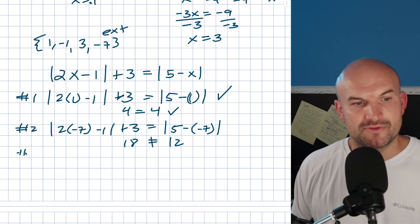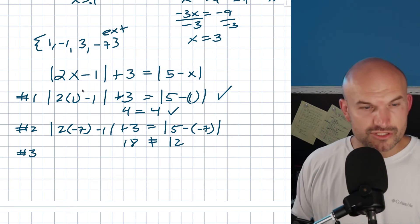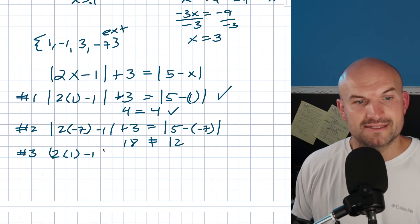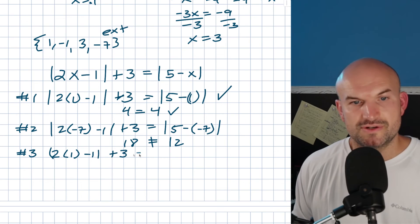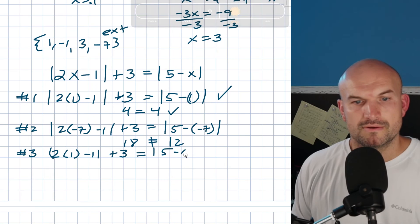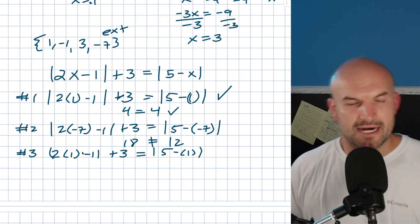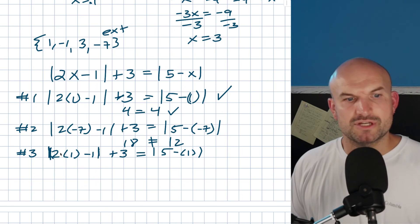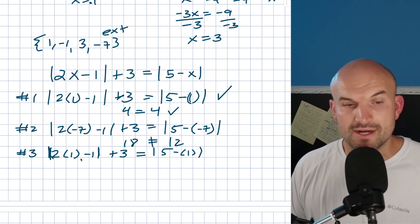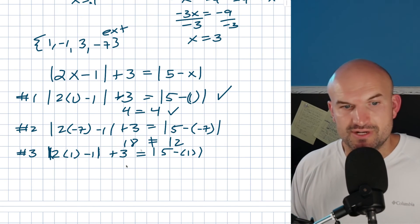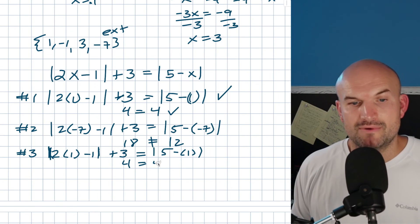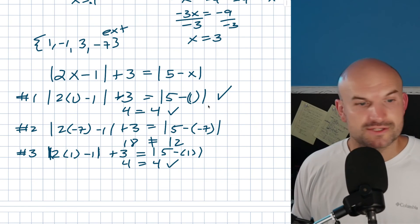Now let's check x equals positive 1 from case three. We compute the absolute value of 2 times 1 minus 1, plus 3. That's the absolute value of 1, which is 1, plus 3 equals 4. On the right, the absolute value of 5 minus 1 is 4. So that one also checks out — positive 1 works.